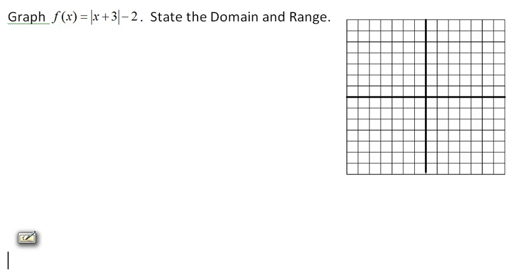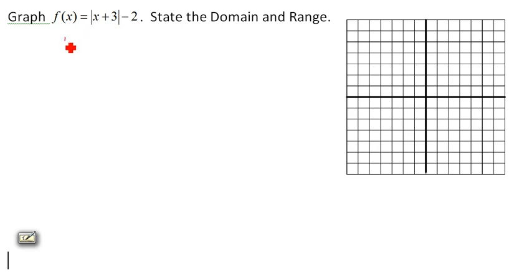Let's do one more example of graphing an absolute value. This one's a little bit different. We've got x plus 3 minus 2. Remember that f of x, the function of x, just means y. So y equals the absolute value of x plus 3, minus 2.